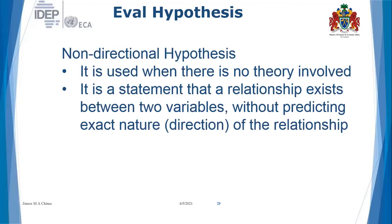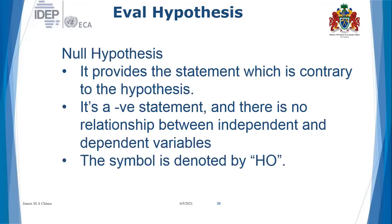A non-directional hypothesis is used when there is no theory involved. It provides a statement which is contrary to the hypothesis — it is a negative statement, and there is no relationship between variables.